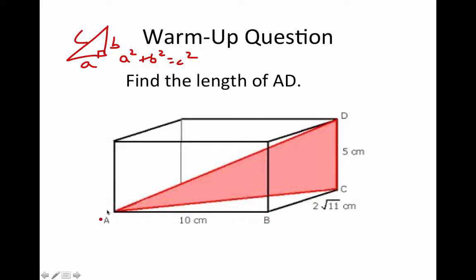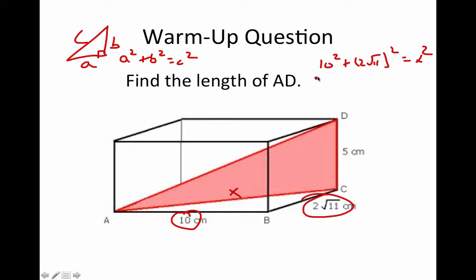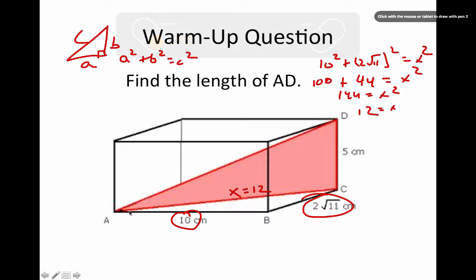So if I'm going to solve this — assume all right angles — we're eventually looking for diagonal AD of the box. First, use the bottom triangle: 10² + (2√11)² = x². That's 100 + 44 = 144, so x = 12.